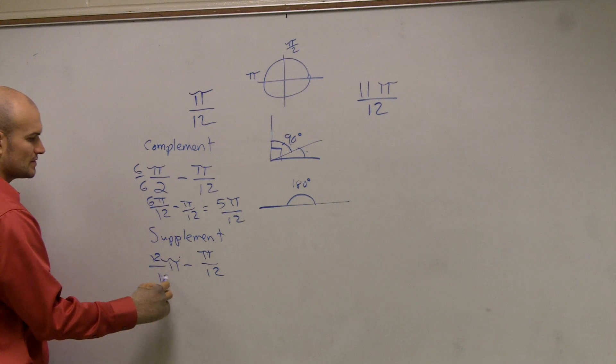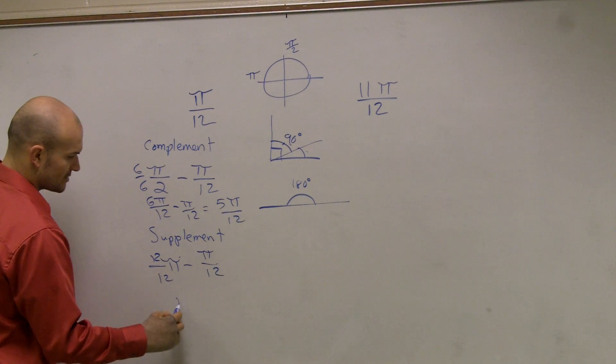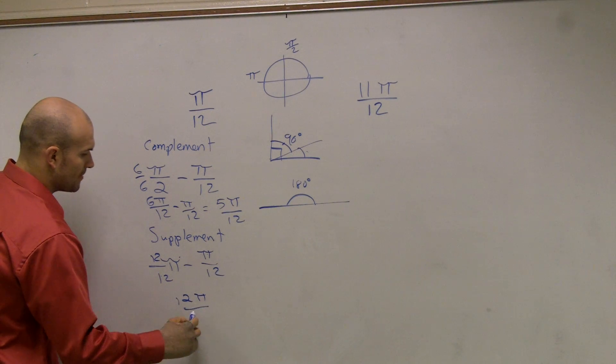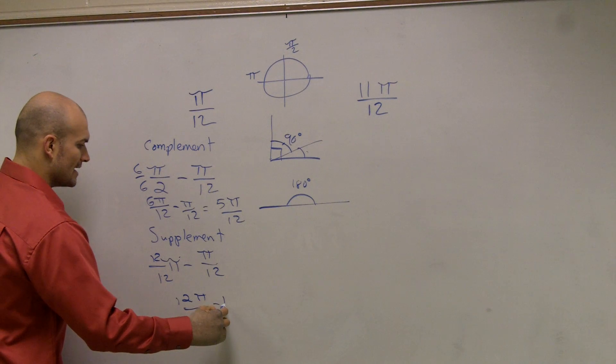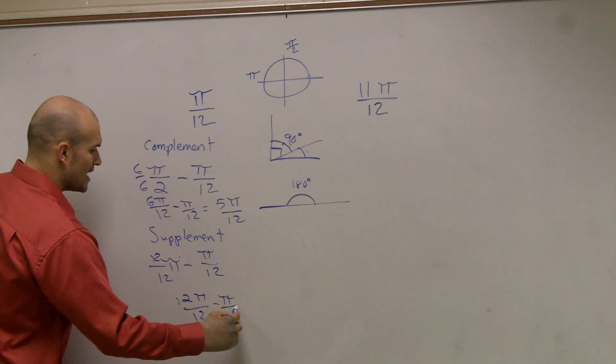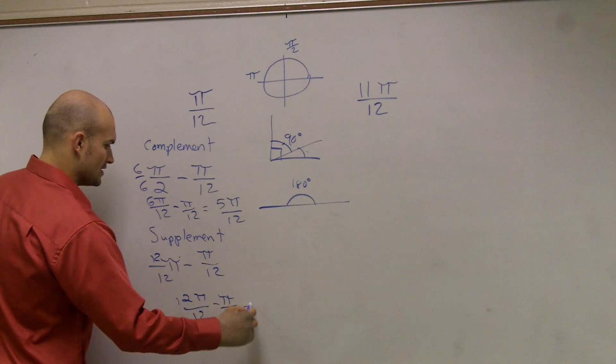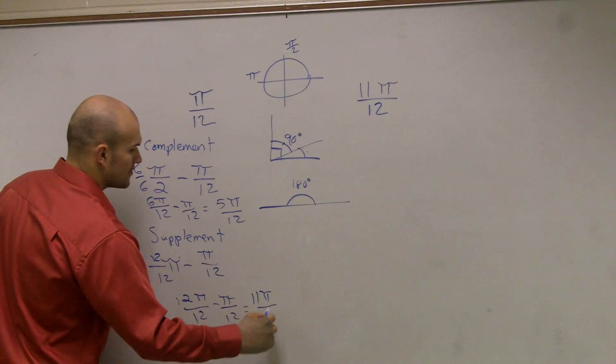This, I have to multiply by 12 over 12. And so I get 12π over 12 minus π over 12 which equals 11π over 12.